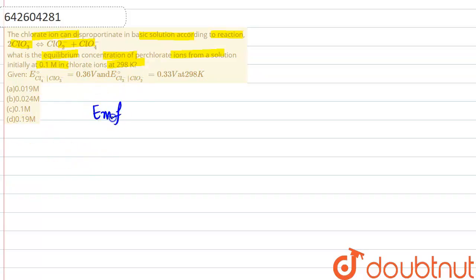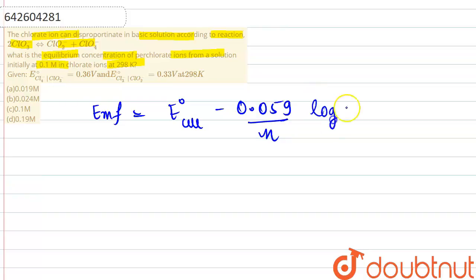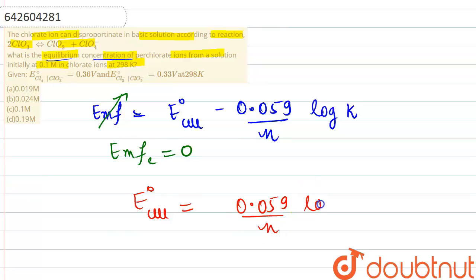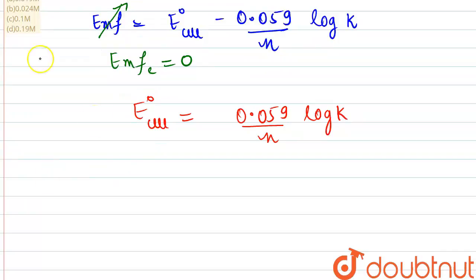We will apply the Nernst equation, according to which the EMF of the cell equals E°cell minus 0.059 divided by n, multiplied by log K, where n is the number of electrons involved. At equilibrium, the EMF of the cell equals zero, so the expression becomes: E°cell equals 0.059 divided by n, times log K.